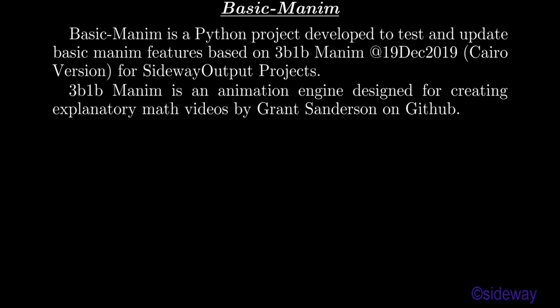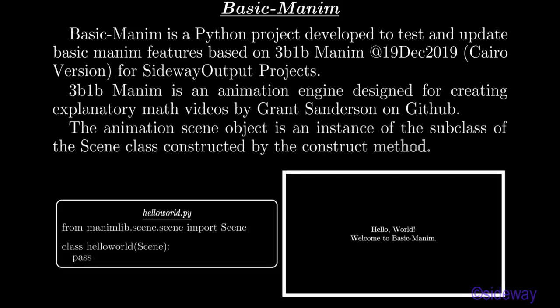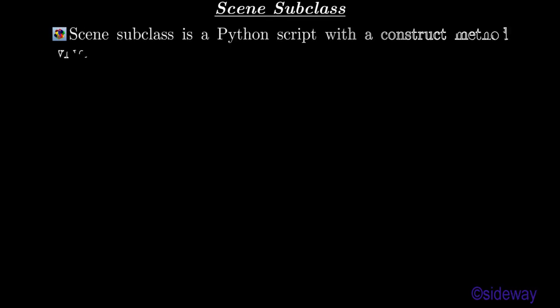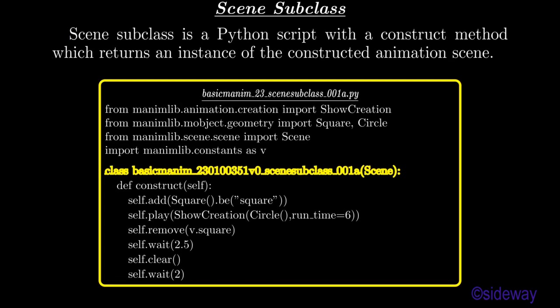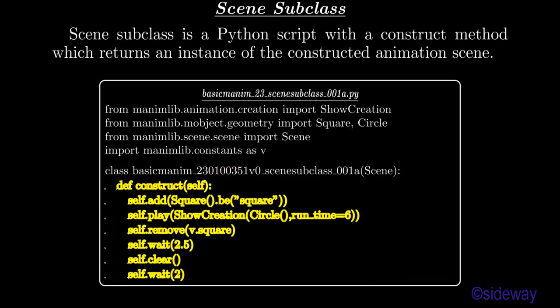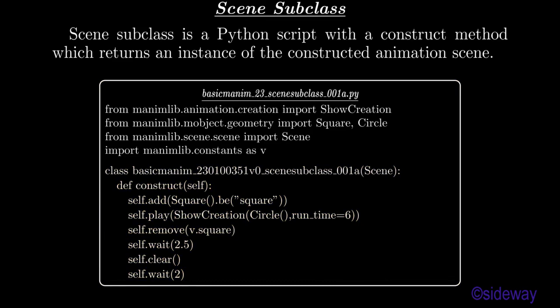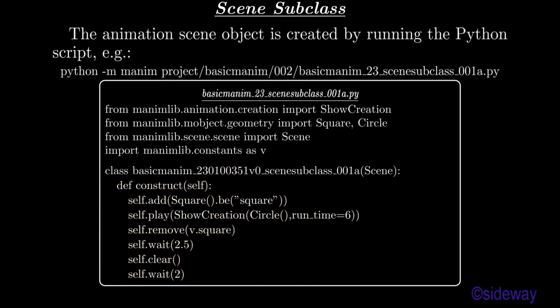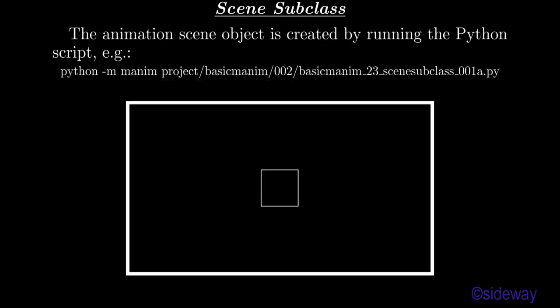The animation scene object is an instance of the subclass of the scene class, constructed by the construct method. A scene subclass is a Python script with a construct method which returns an instance of the constructed animation scene. The animation scene object is created by running the Python script, for example: python -m manam project/basic_manam/002/basic_manam_23_scene_subclass_001a.py -pl